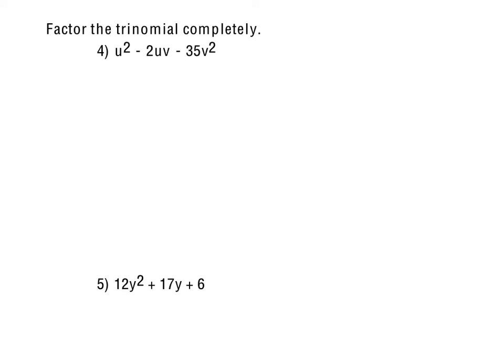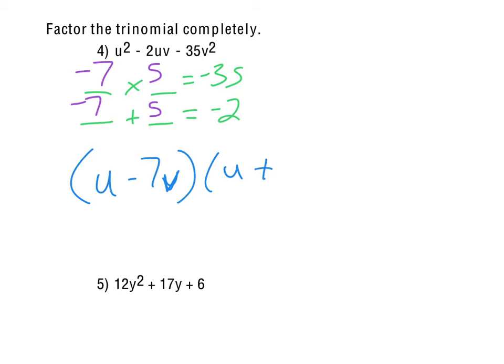Looking at number 4, I don't see any special patterns there. The 35v² is not a perfect square, plus it is being subtracted. So we would really just be looking at, in this case, since it's just a plain u², we could just do the what times what equals negative 35, what plus what equals negative 2. So your factors of 35 that are going to work there would be negative 7 and positive 5. Again, don't let the u's and v's throw you off. It's just going to be u minus 7v.